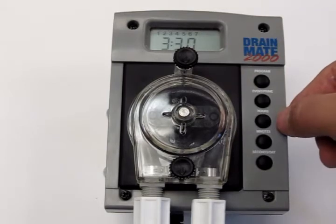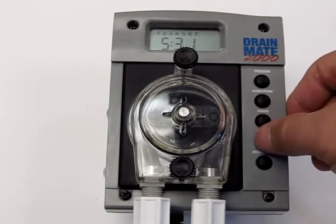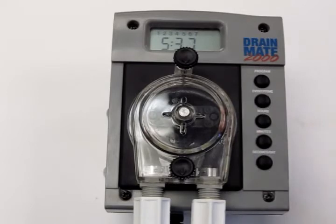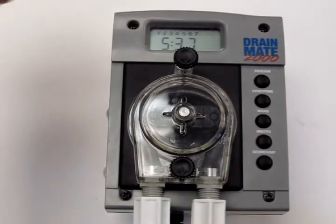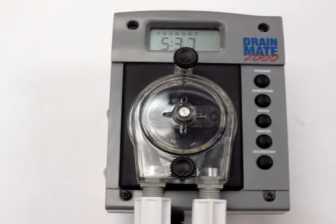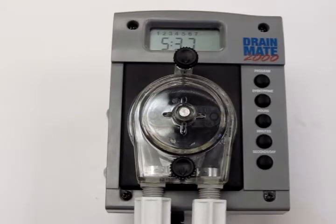To change the time, you hit the Hours and Minutes button at whatever your preferred time is. Also on the top of the screen, you will see 1 through 7. That is indicating the days of the week, Monday starting at 1, Sunday starting at 7.